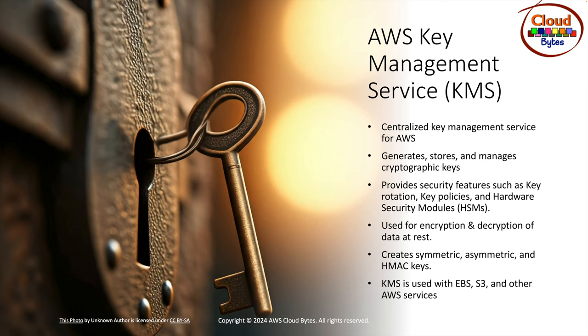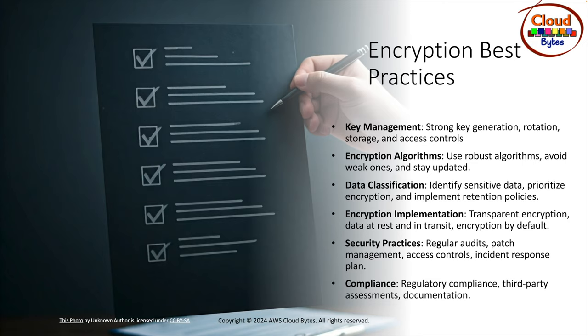Encryption best practices around key management include: using a secure random number generator to produce strong cryptographic keys; implementing key rotation so that compromised keys are not long-term valid and the window of compromise is reduced; storing keys in a Hardware Security Module; and limiting who can access the keys so that your encryption keys are not available to everyone.